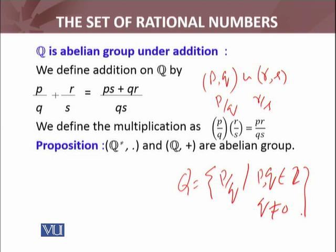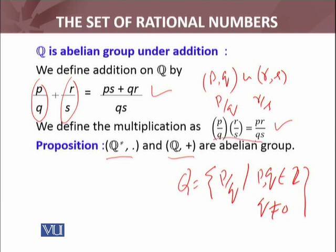Using this equivalence relation, we define the set of rational numbers. Given two members of this set, we add them and multiply them by the standard rules for fractions. It is an easy exercise to check that the set of rational numbers under this addition law is an abelian group, and that Q* — the non-zero rational numbers — under this multiplication rule is also an abelian group. You can verify this yourself.